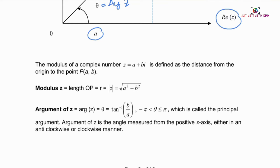The interval of theta is from negative pi to pi, which is called the principal argument. The argument of Z is the angle measured from the positive X-axis, either in an anti-clockwise or clockwise manner.